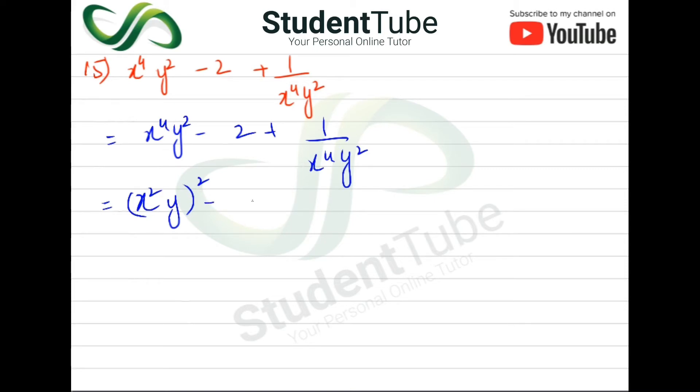Now minus - here we will put 2, and with 2 we will put x and y. So what will happen here? x²y will come, and 1 over x²y is the same way.